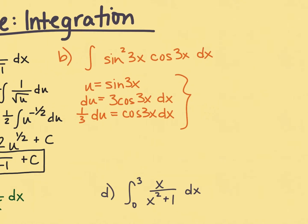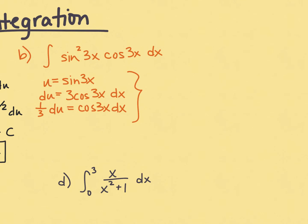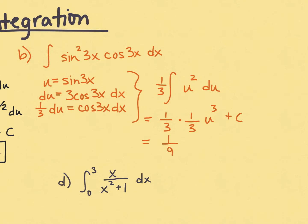Dividing by 3 gives one third du equals cosine of 3x dx. Rewriting the integrand in terms of u: sine squared of 3x becomes u squared, and cosine of 3x dx gets replaced with one third du. The one third goes out front, and we use the power rule for integration — add 1 to the exponent of 2 to get 3, divide by 3. Combined with the initial one third that gives one ninth, and u gets cubed plus c. Back substituting: the sine of 3x cubed or sine cubed of 3x, plus c.